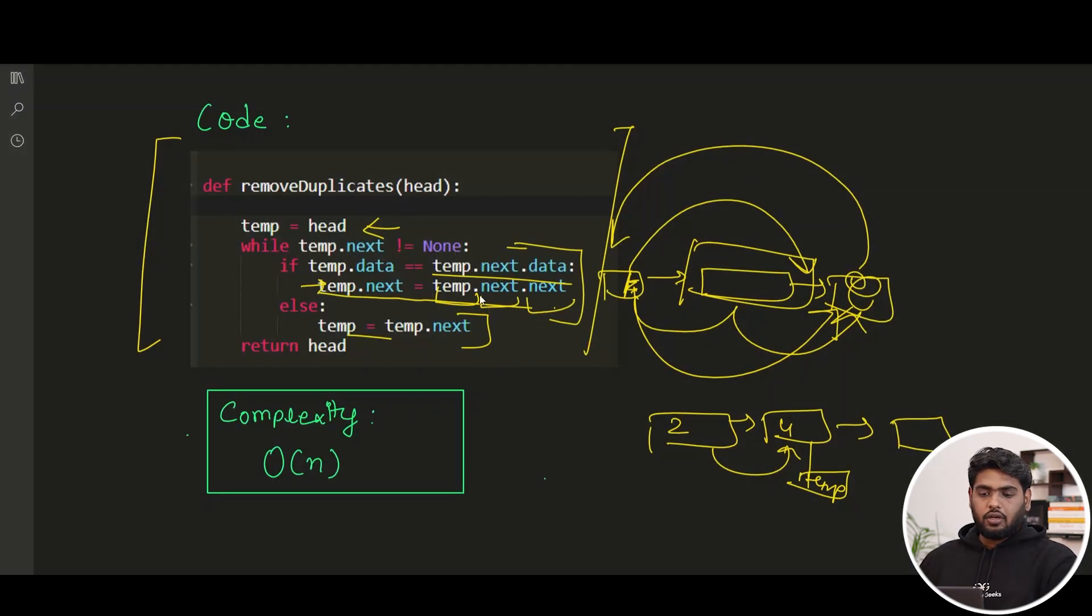So again coming here, what we are actually doing is we are just traversing the linked list for only one single time. Once we are starting from here and we are ending till the end of the linked list, we are traversing it for one time. And assuming that n number of nodes are there in our linked list, our complexity is going to be O(n). That is your linear time complexity. I hope this video helped you, keep coding.